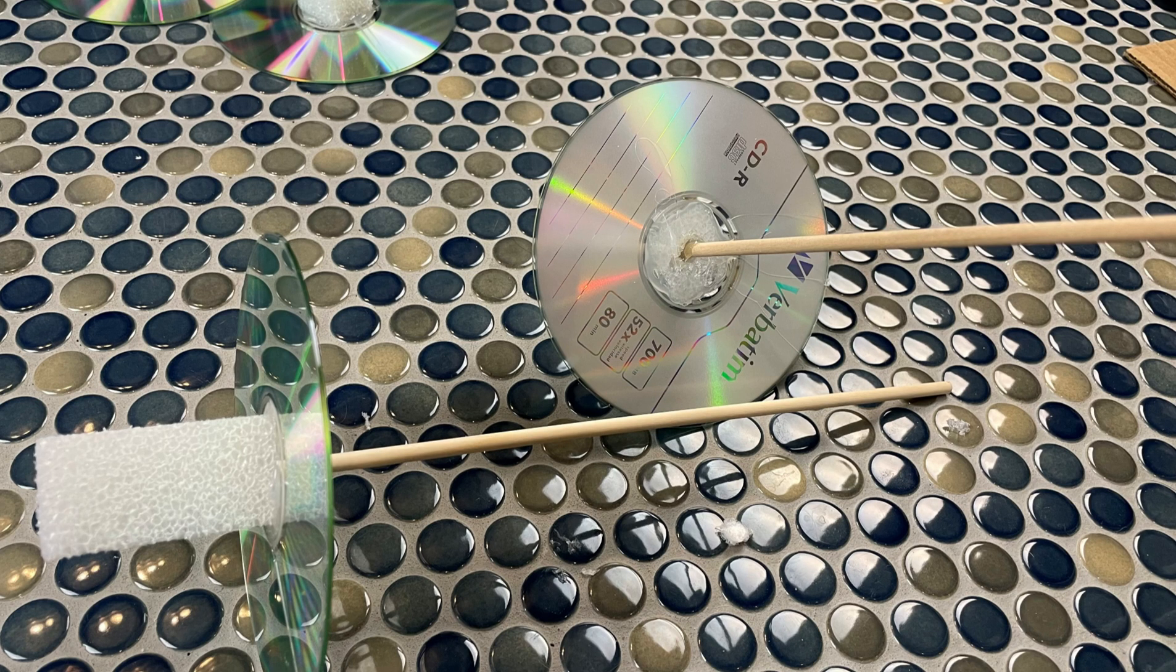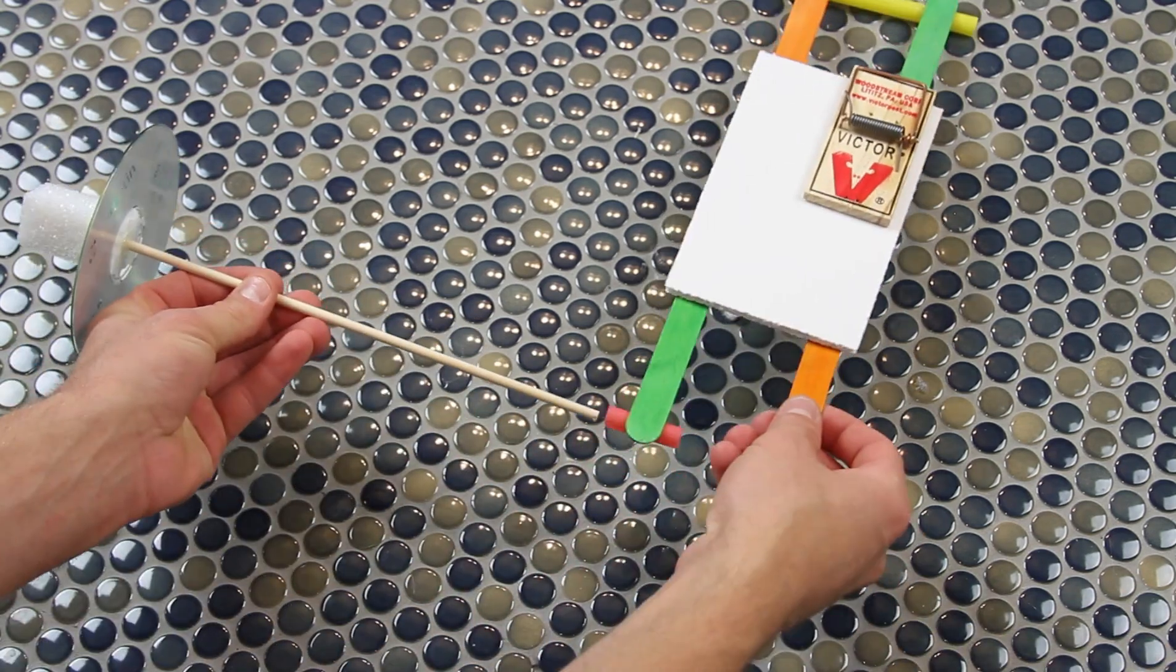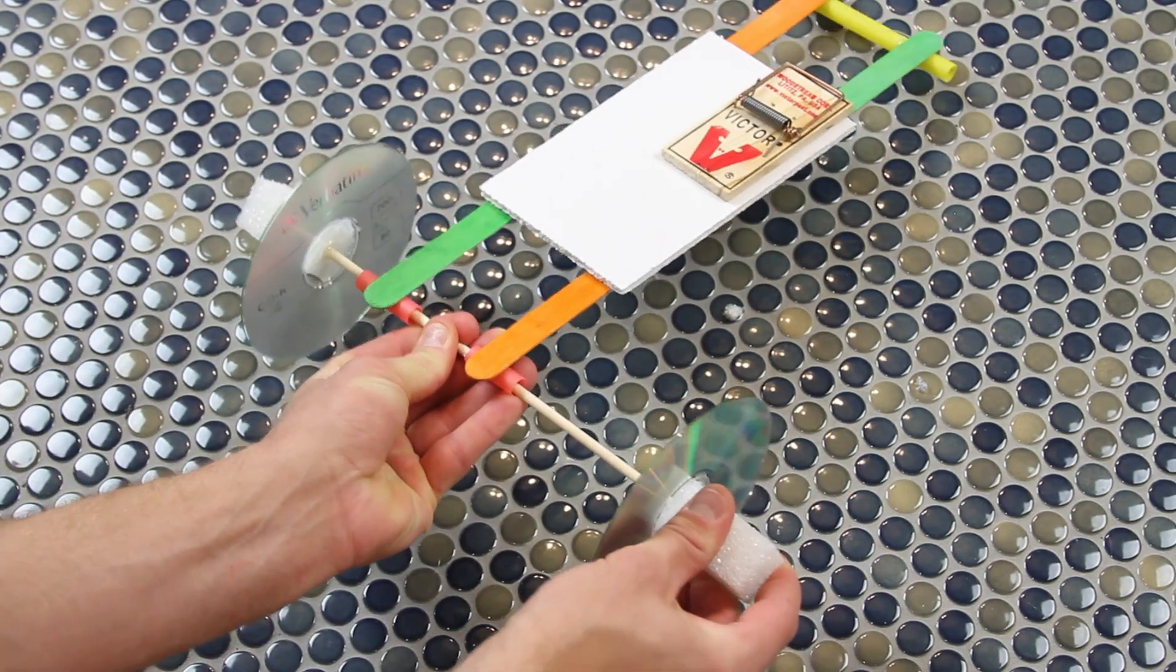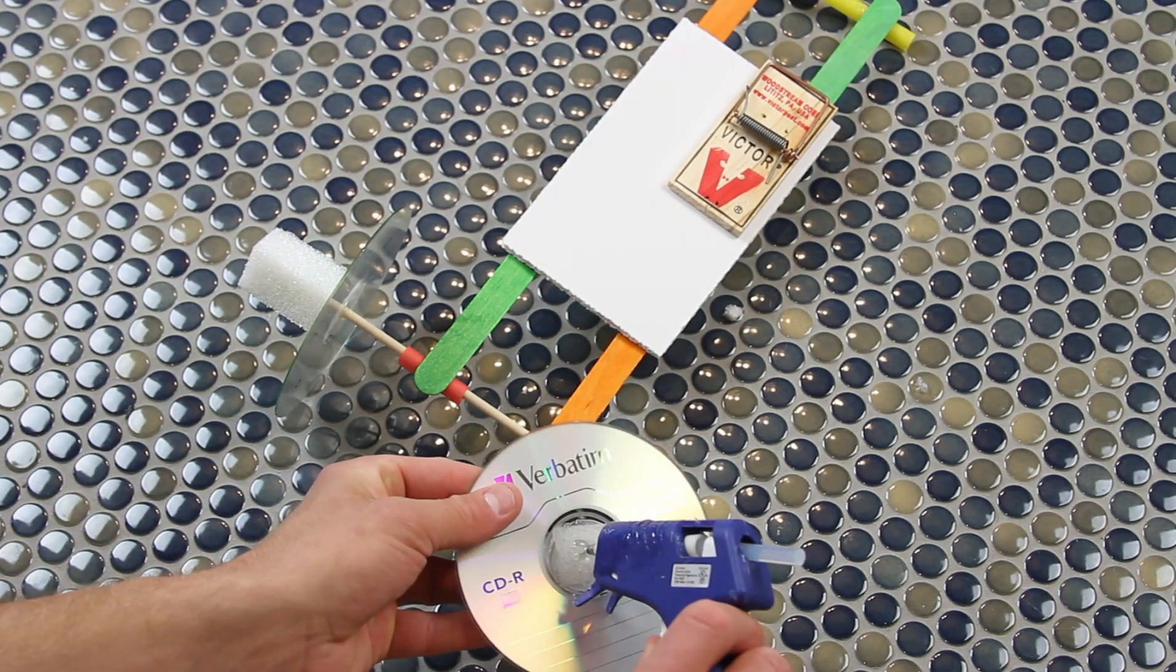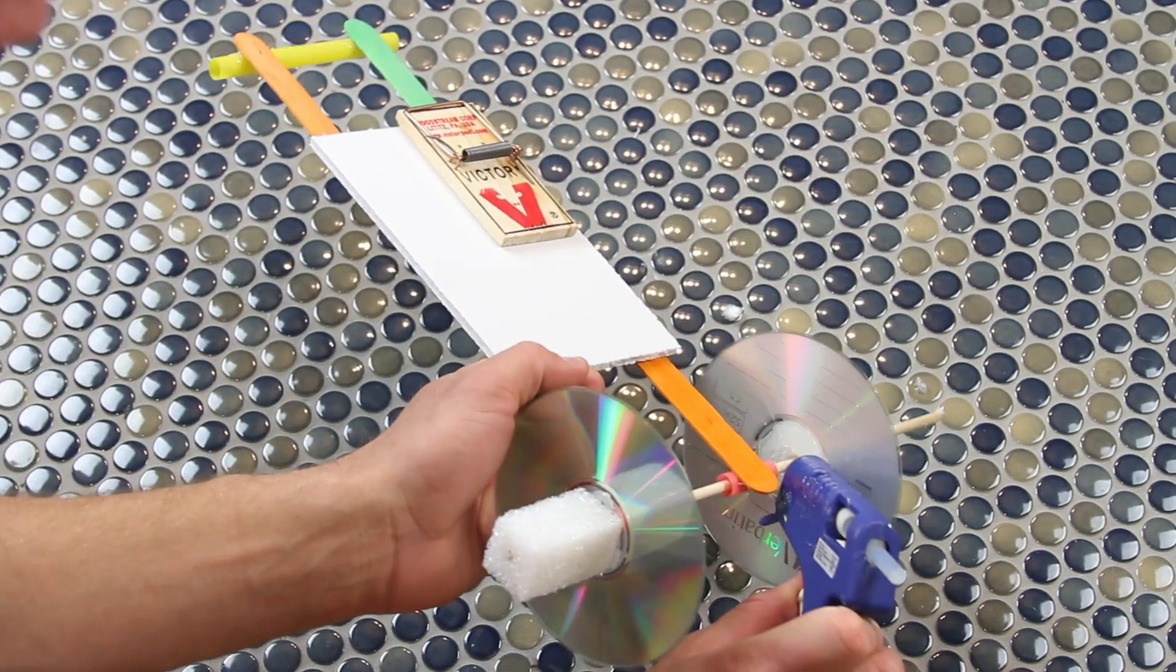Now it's time to feed it through. With one wheel attached to the dowel, slip it through the straw and repeat the same process for the other wheel. You can decide how far apart you want the wheels from the side of the car, and if the dowel is sticking out extra far, feel free to trim that.